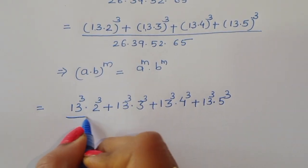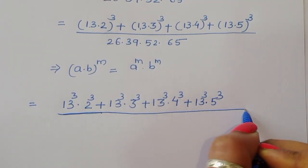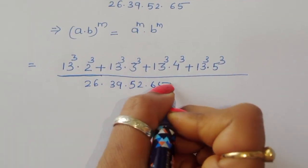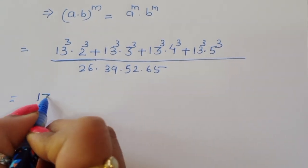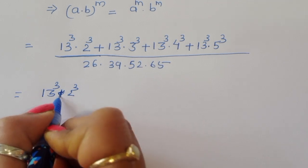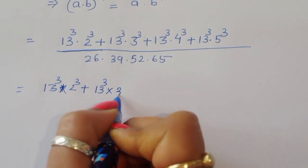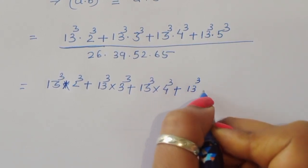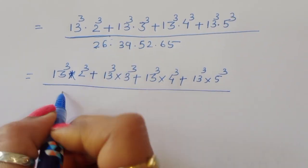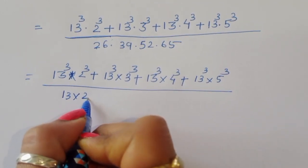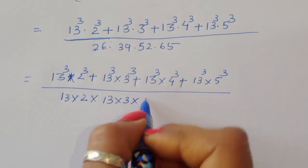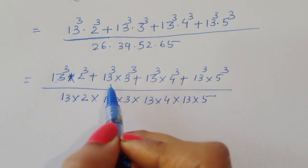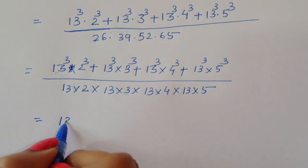This is all divided by 26 times 39 times 52 times 65. Now we can rewrite the denominator as (13 times 2) times (13 times 3) times (13 times 4) times (13 times 5). You can see here we can take 13 power 3 common from the numerator.